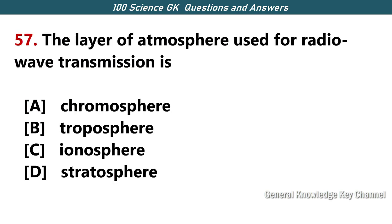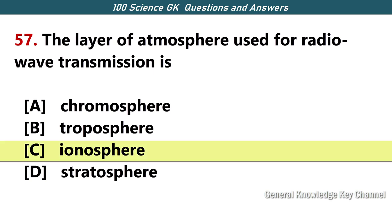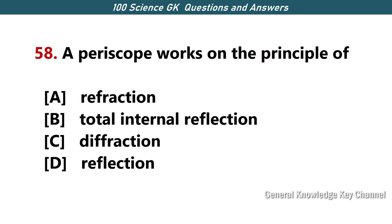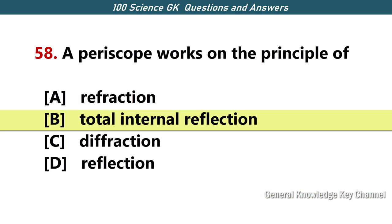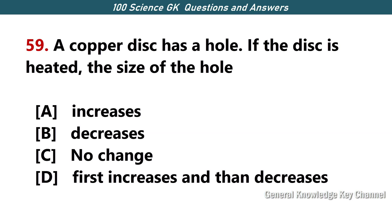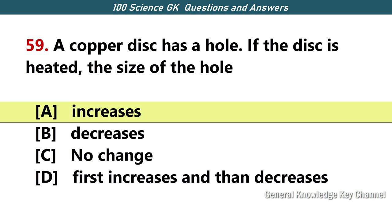The layer of atmosphere used for radio wave transmission is — Answer C — ionosphere. A periscope works on the principle of — Answer B — total internal reflection. A copper disk has a hole; if the disk is heated, the size of the hole — Answer A — increases.